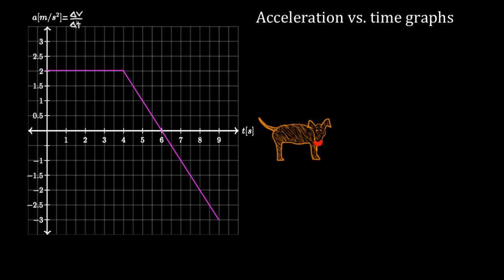What can we figure out? Well, we can figure out some stuff because acceleration is related to velocity. Acceleration is defined to be the change in velocity over the change in time. So if we solve this for delta V, we get that delta V equals the acceleration during a time interval times the time interval itself. This is the key to relating this graph to velocity.